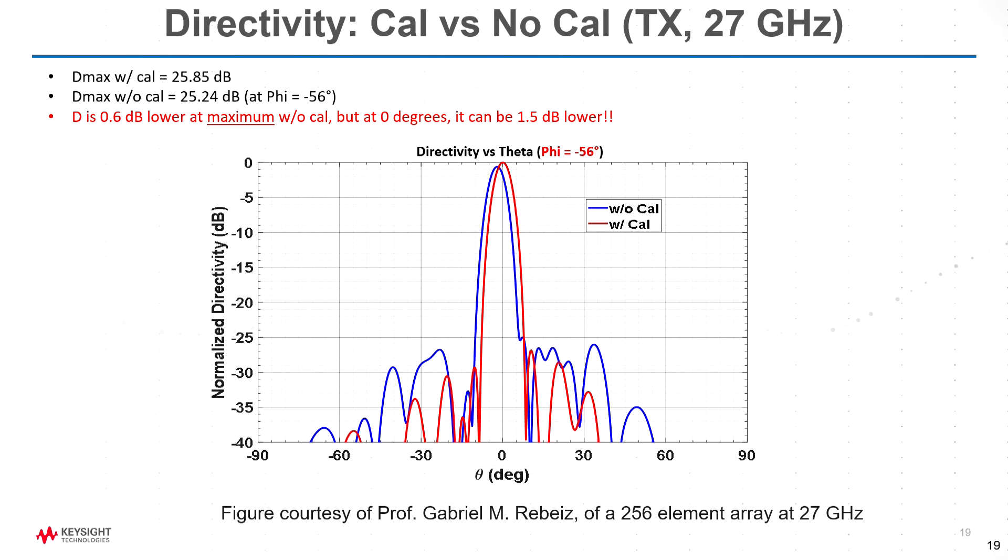Why does that matter? Well, the gain isn't changed so much by that, but the directivity or the direction of it is. So Professor Rubies kindly gave me this measurement of a different antenna. Shows in this case, the boresight apparent gain can change by about a dB and a half. The actual gain only changes by 0.6 dB when you calibrate it, but your pointing angle can be off as well. So you have to be quite careful with that.